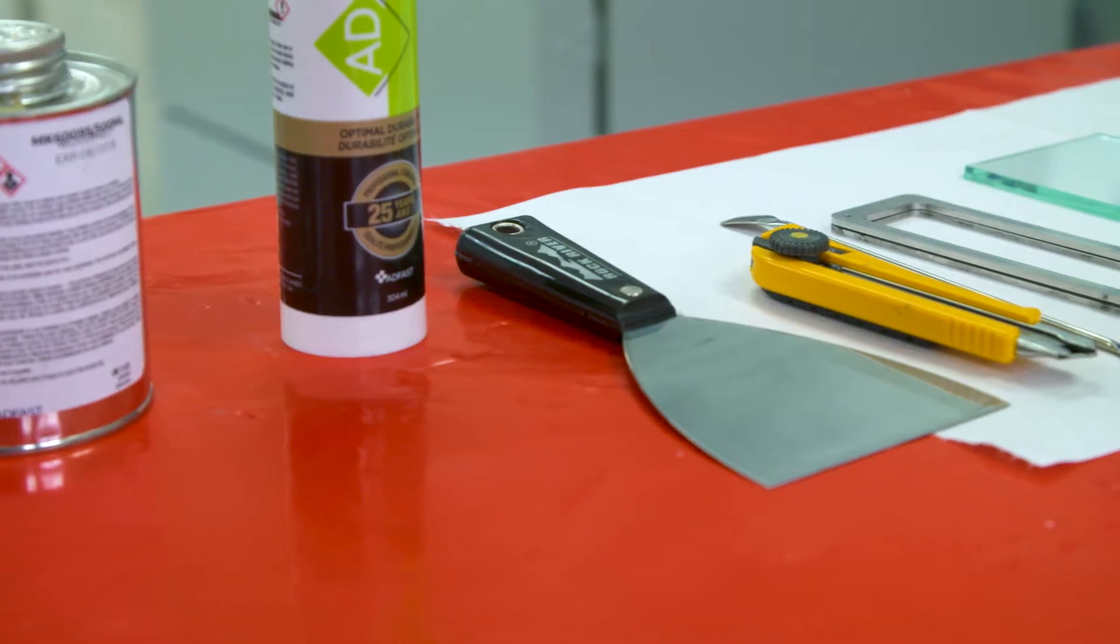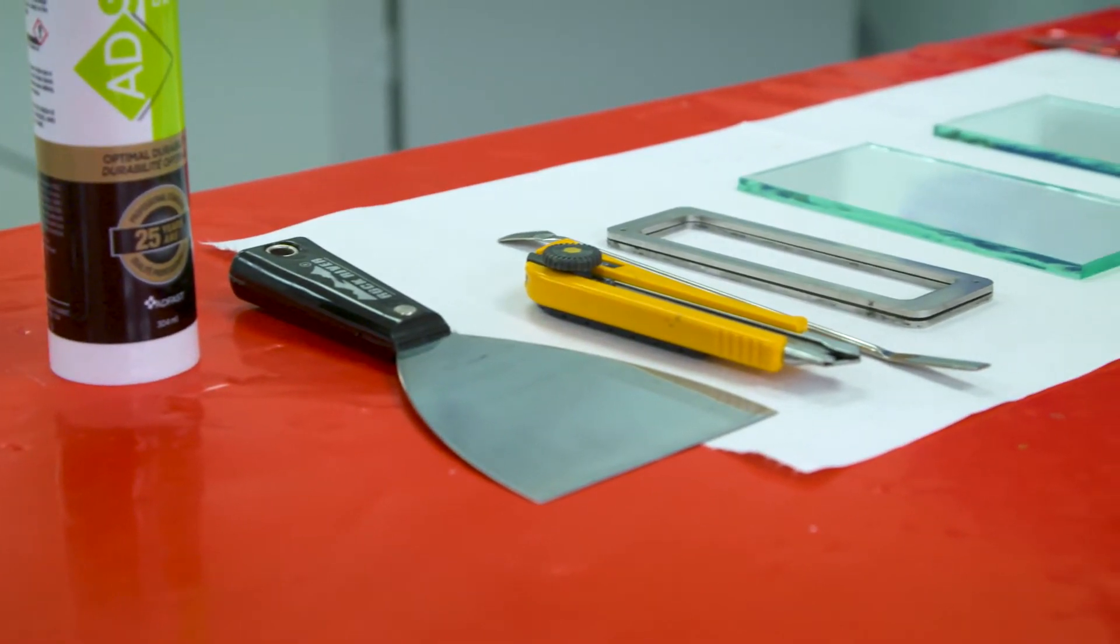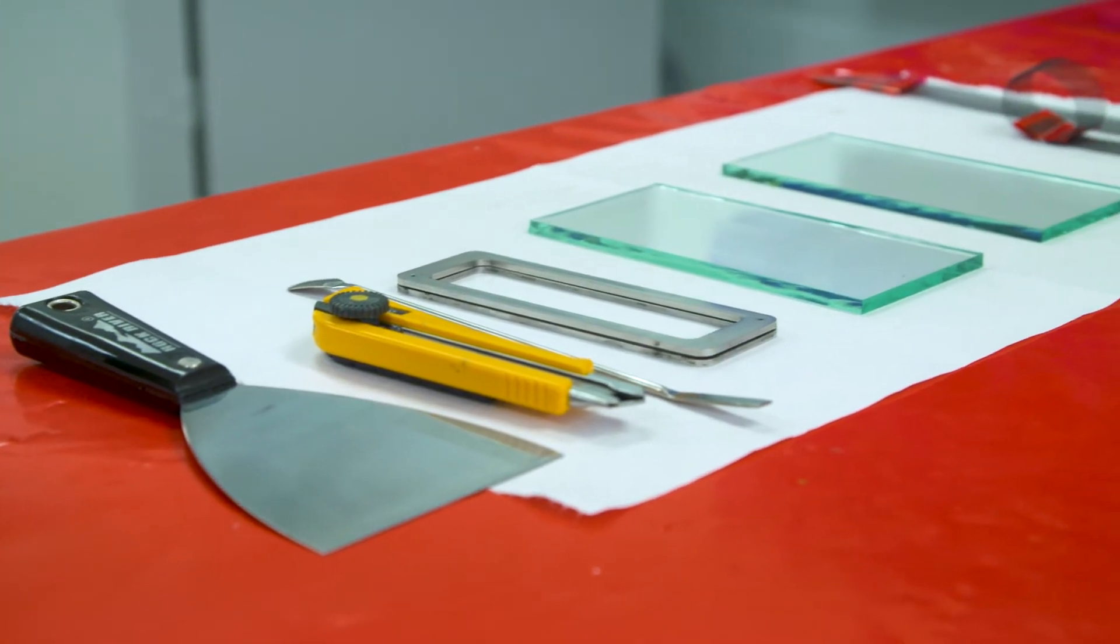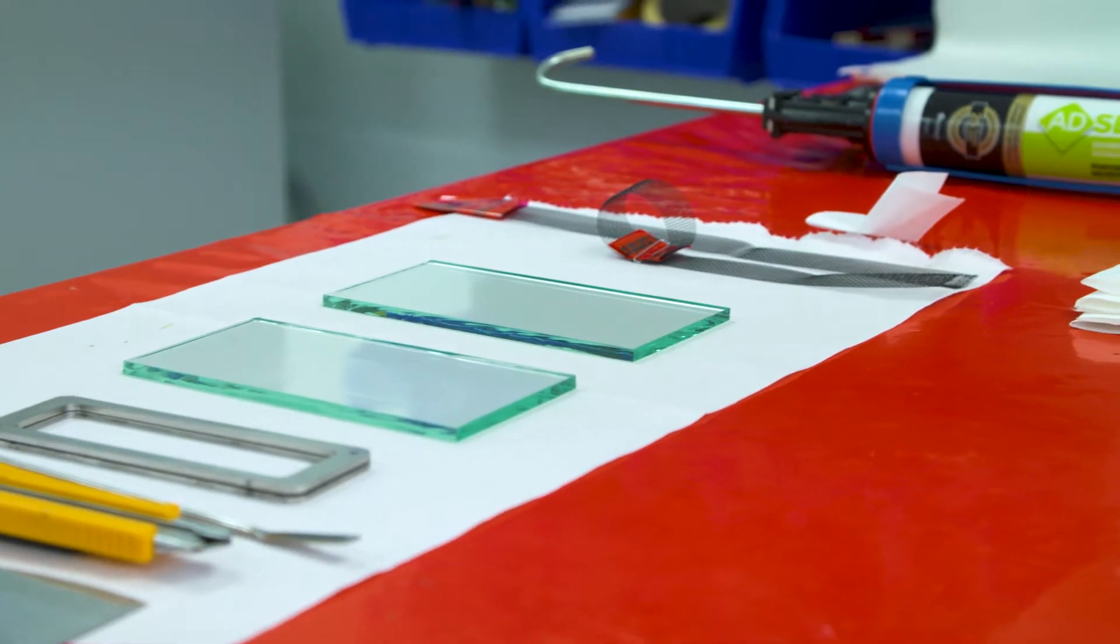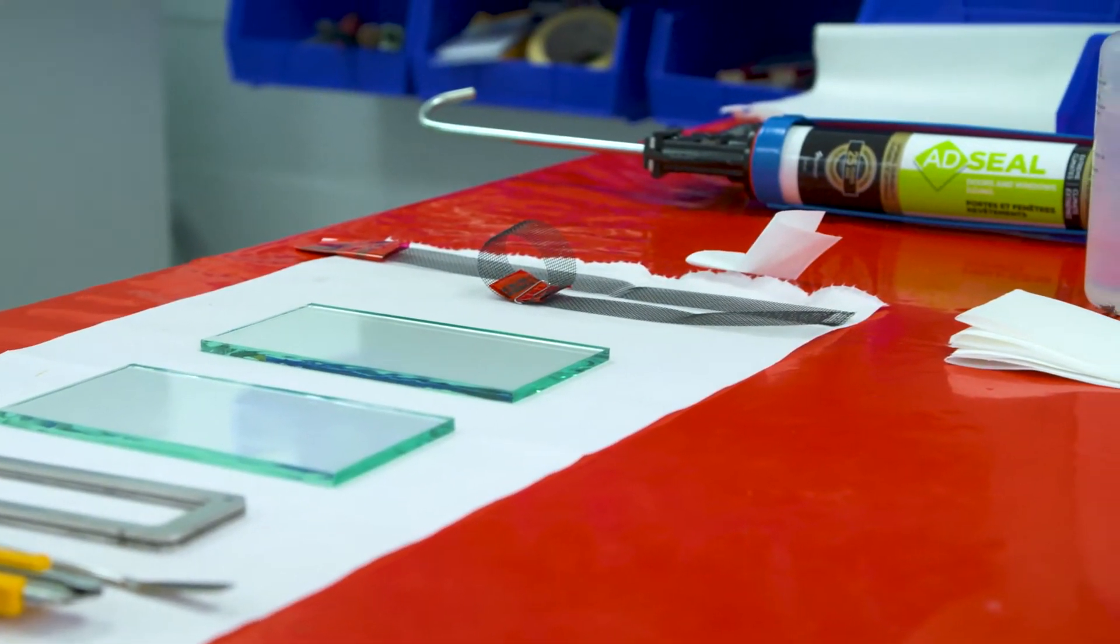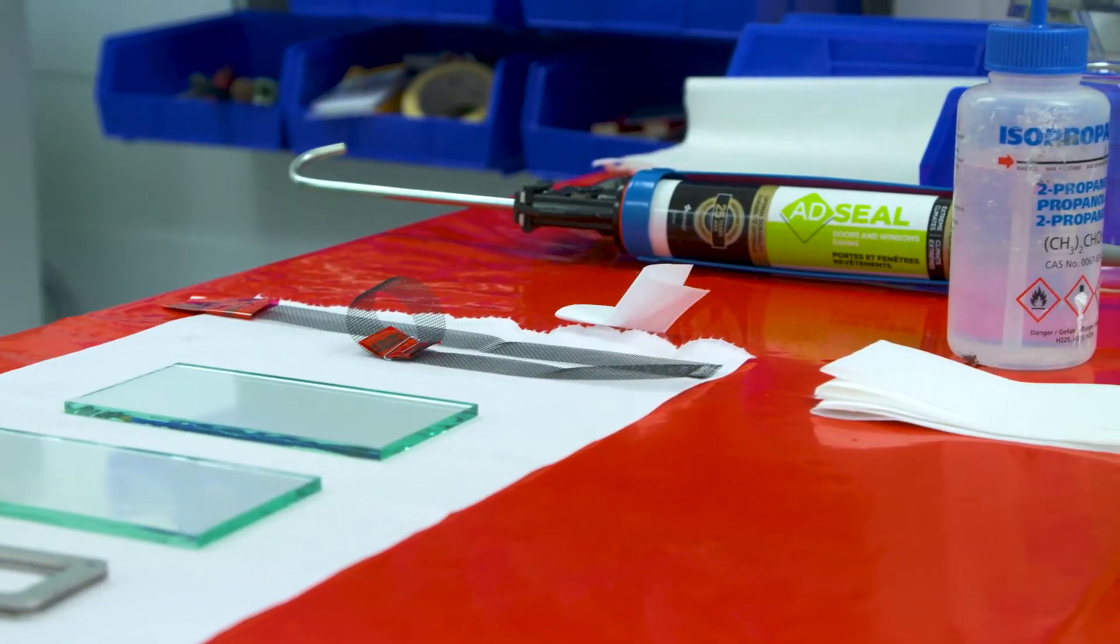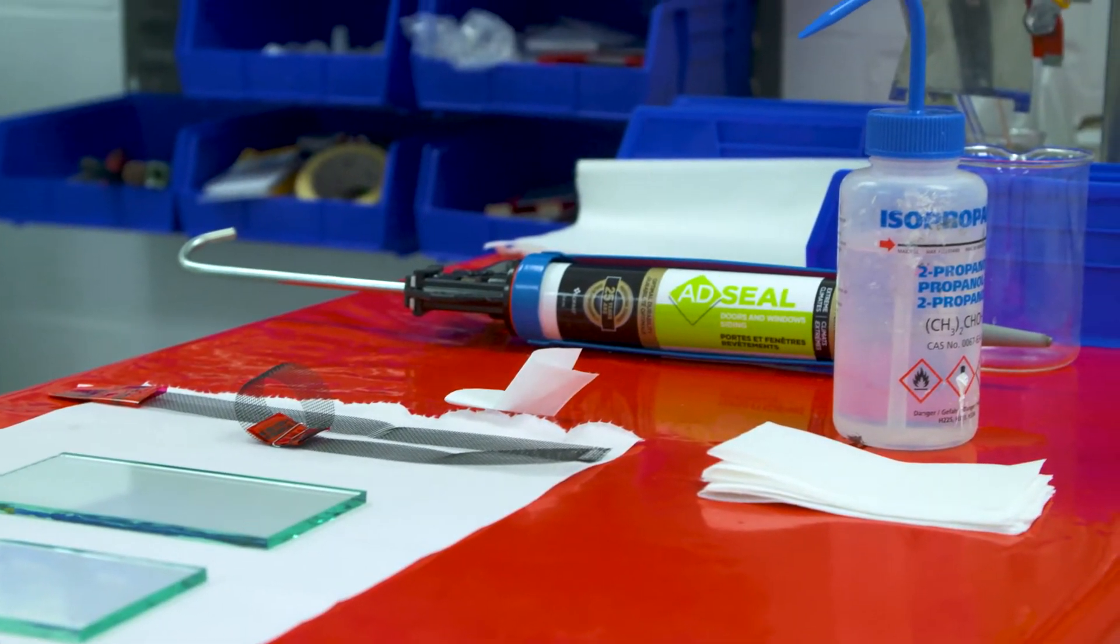The required instruments are two types of spatulas, one utility knife, one template, one aluminum mesh, one substrate. In this case, we are demonstrating with glass, but several other substrates can be used. Measuring device: INSTROM.